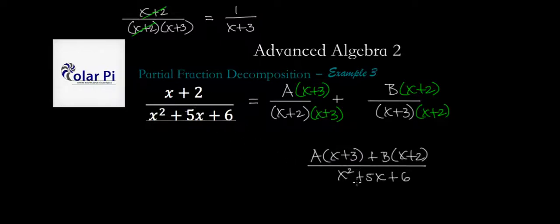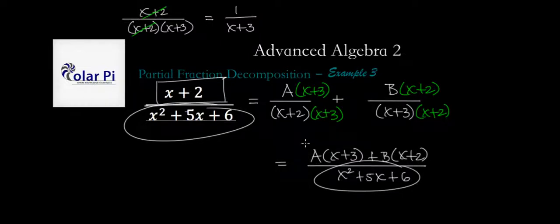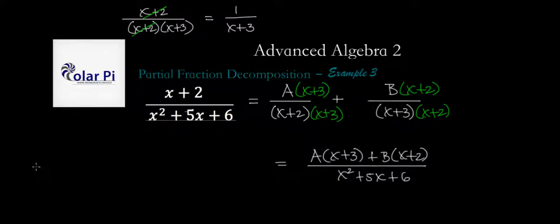But in order for this to equal this, in order for this guy and this guy to equal, the denominators are already equal. So we only require that the numerators, this guy and this guy be equal. So that means that we require x plus 2 to equal A times x plus 3 plus B times x plus 2.